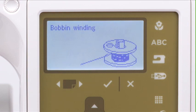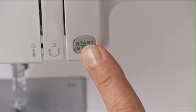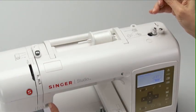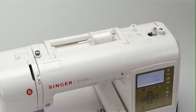The LCD screen will show that the machine is in bobbin winding mode. Hold the free end of the thread and then press the start stop button. Stop the machine after the thread has been wound a few revolutions and then trim the thread close to the bobbin.